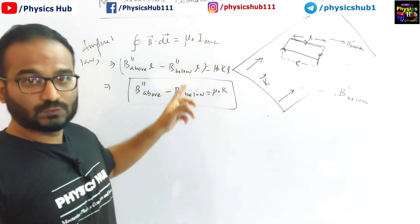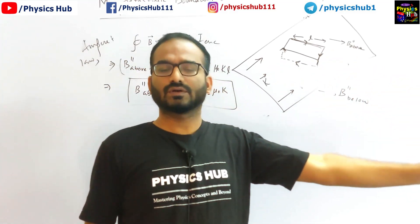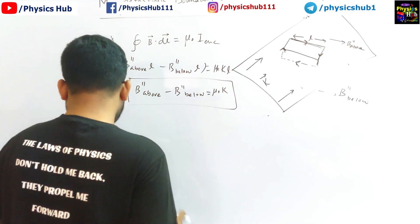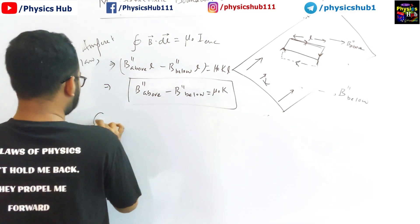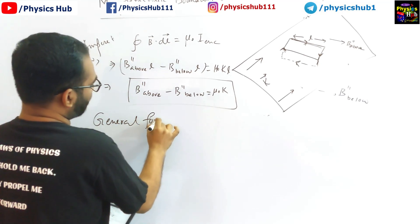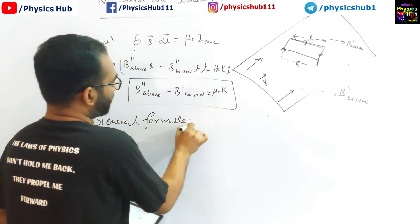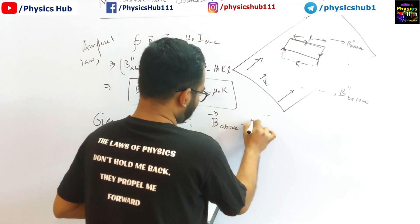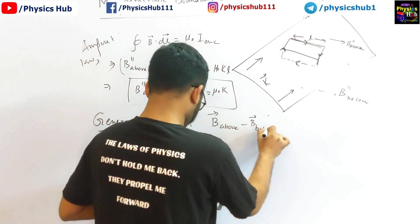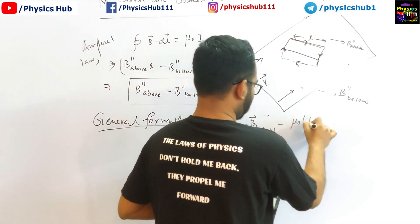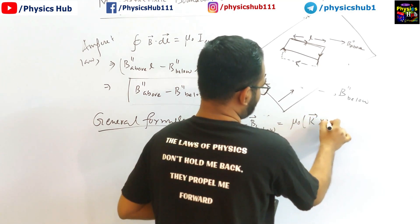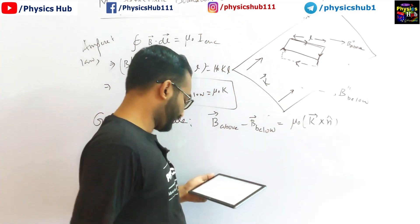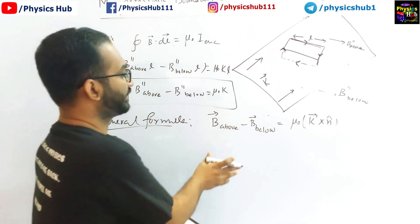These two conditions — for the perpendicular component and the parallel component — can be combined into a single general formula. The general boundary condition is: vector B_above minus vector B_below equals μ₀ times (K cross n̂), where n̂ is the unit vector directed outward from the surface.